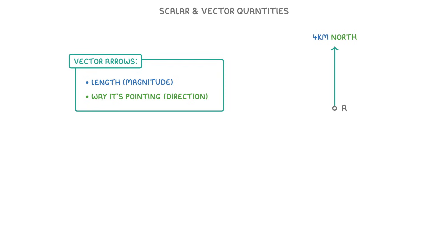So 4km north would look like this, whereas 2km west would be like this, because it's pointing to the left, and it's only half the size of the 4km one.